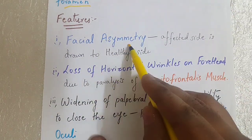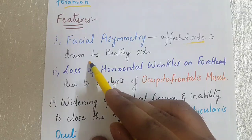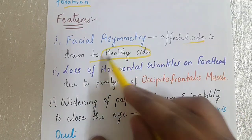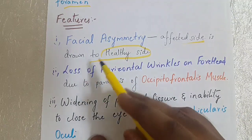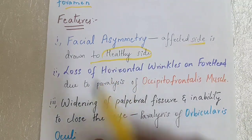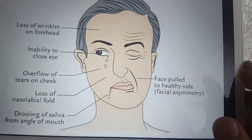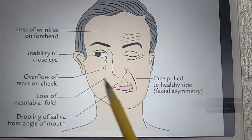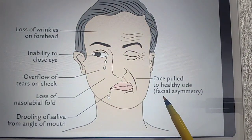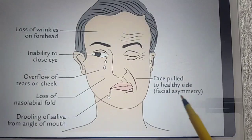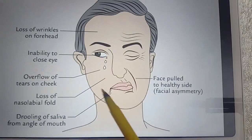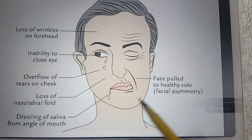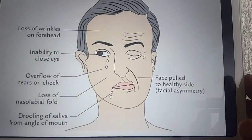The first feature is facial asymmetry — the affected side is drawn toward the healthy side. Looking at this image of Bell's palsy, we can clearly see the facial asymmetry, with the face pulled toward the healthy side.